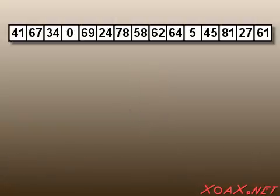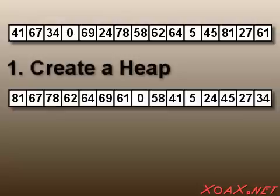The heapsort consists of two steps. For the first step, we construct a heap with all the elements in the array. For clarification, we color code the levels of the heap with four shades of gray so that we can see the implicit tree structure.